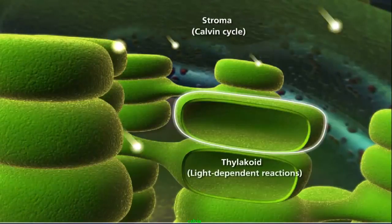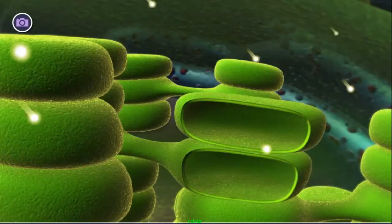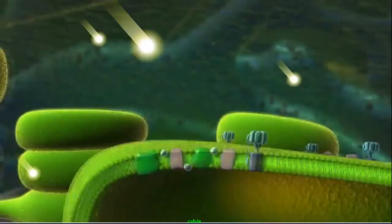The light-dependent reactions occur in the thylakoid. It is here that conversion of light energy to chemical energy is initiated.